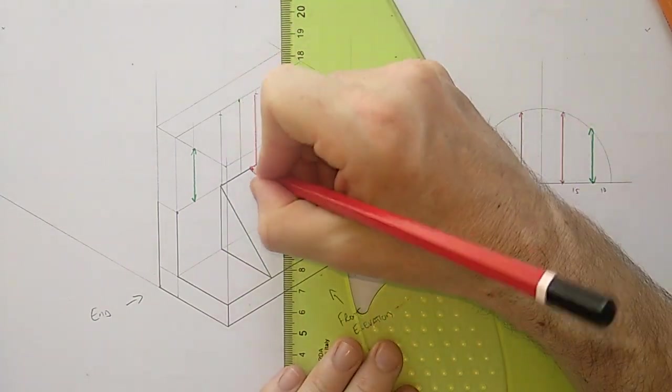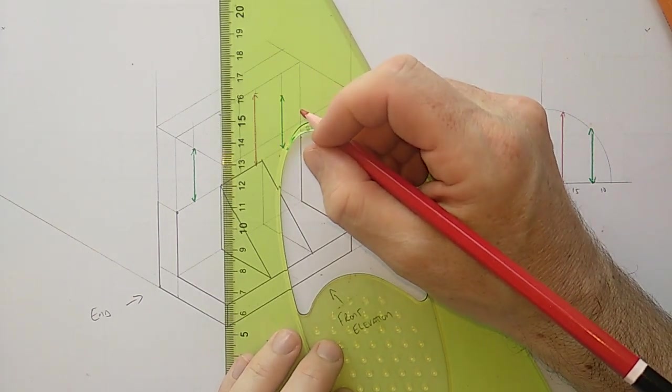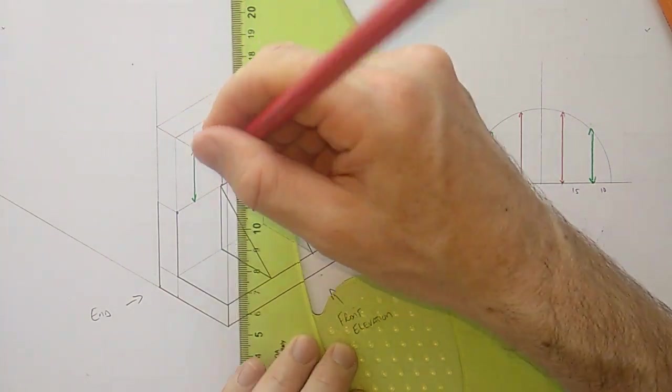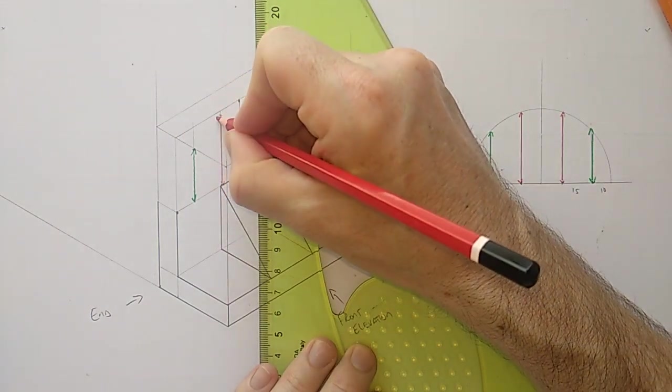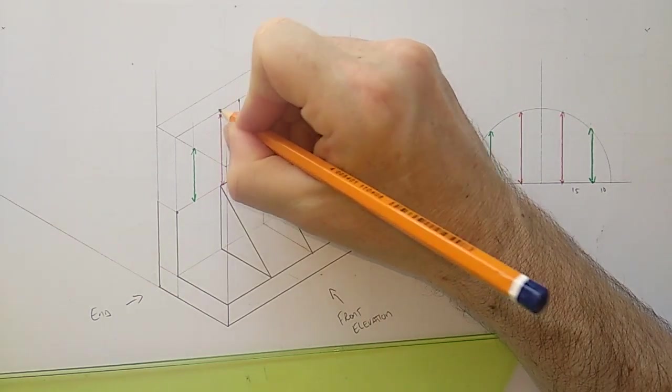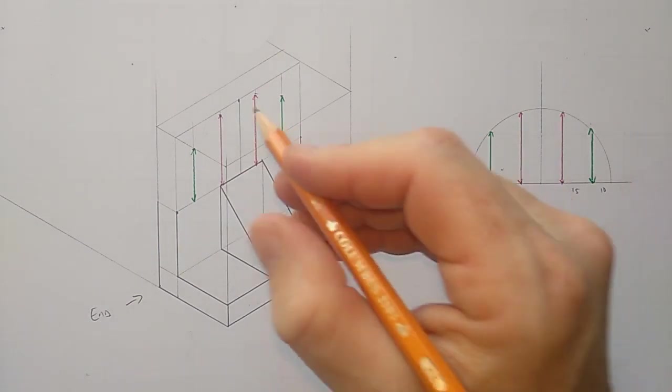There. It's my very wobbly red pencil. Okay. So now I have points there and there. At this stage, it's a case of just freehanding this in.